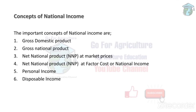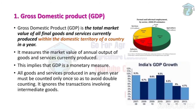Now, the concepts of National Income. There are six concepts in total: GDP, GNP, NNP at market prices, NNP at factor cost (also called national income), personal income, and disposable income. First is GDP.